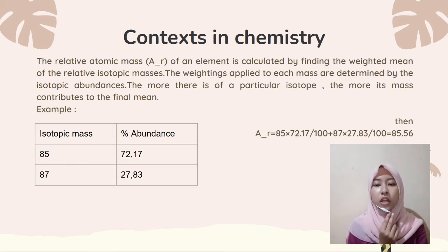The weightings applied to each mass are determined by the isotopic abundance. The more there is of a particular isotope, the more each mass contributes to the final mean. You can see the table below the text.